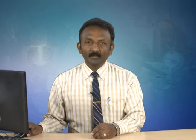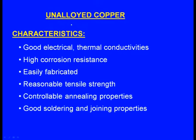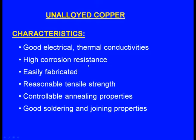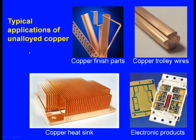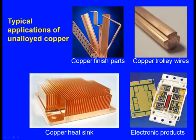The characteristics of unalloyed copper: good electrical and thermal conductivities, high corrosion resistance, easily fabricated, reasonable tensile strength, controllable annealing properties, good soldering and joining properties. Typical applications include copper finished parts, copper trolley wires, electronic products, and copper heat sinks — in all these cases we use unalloyed copper.